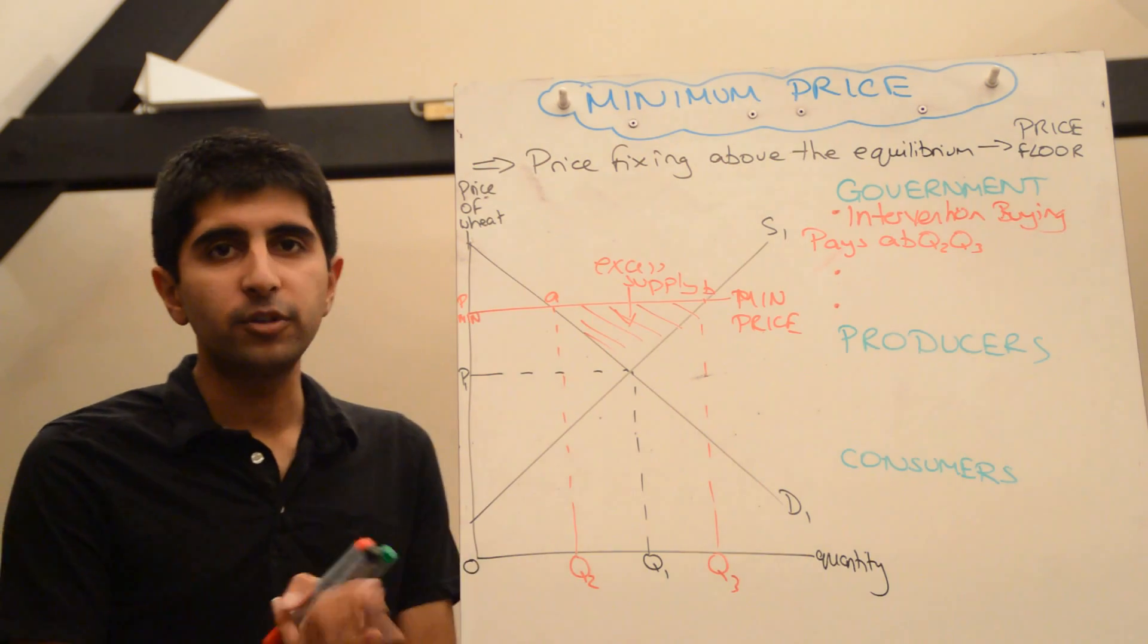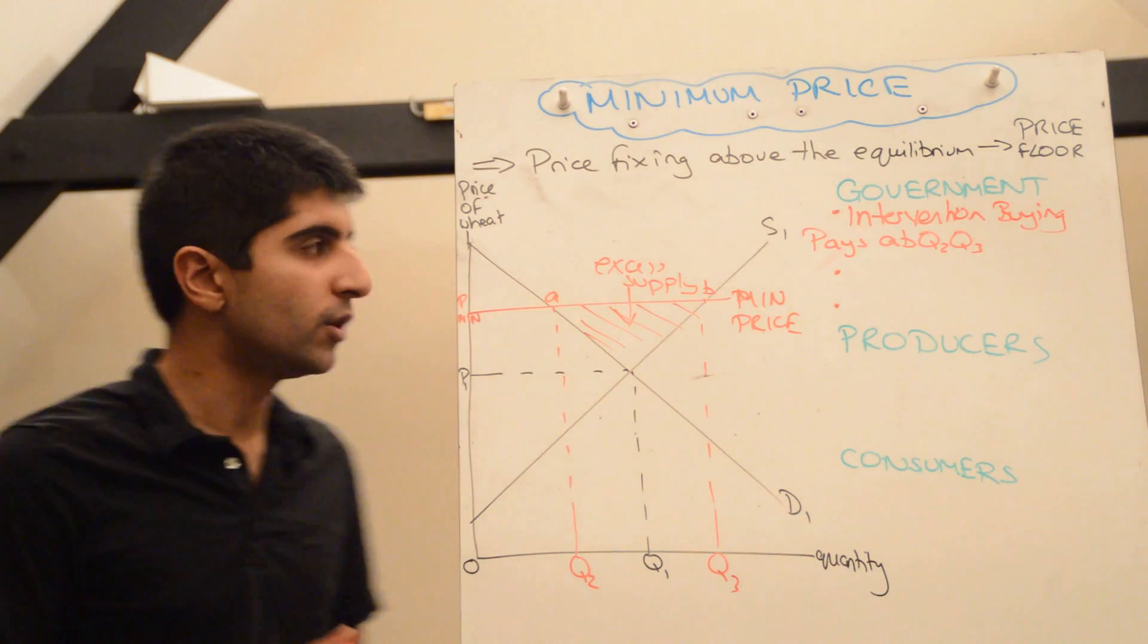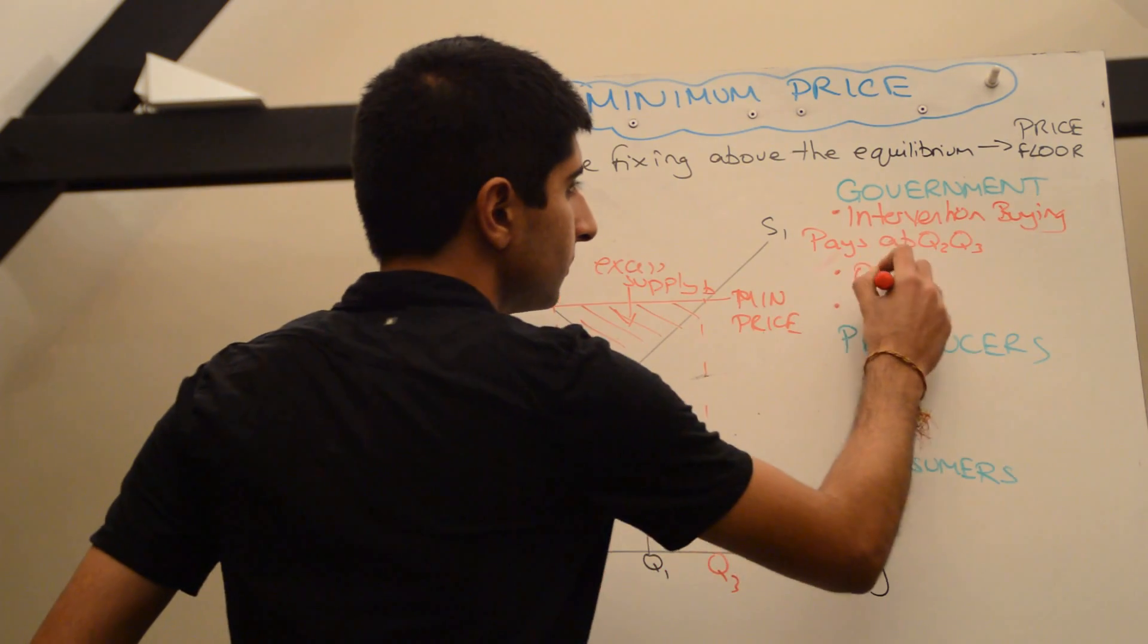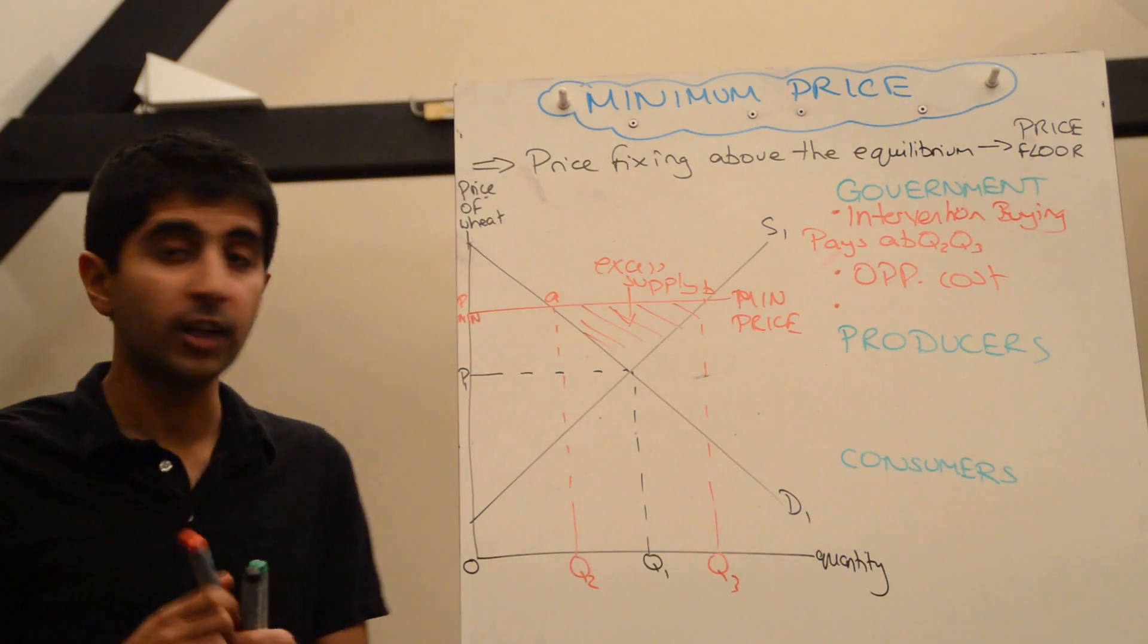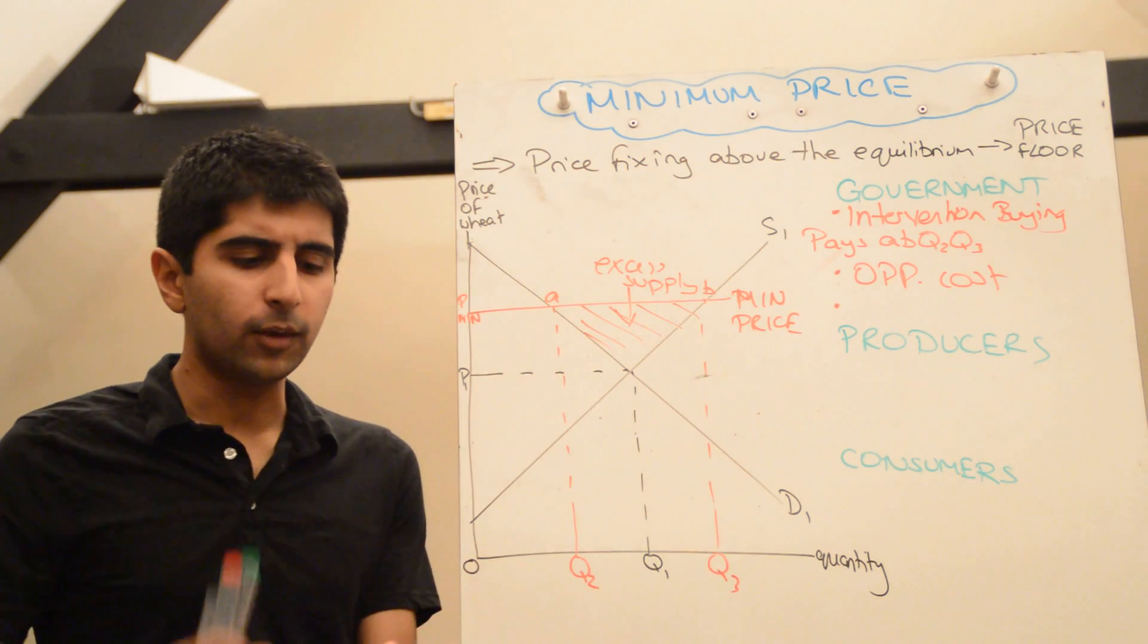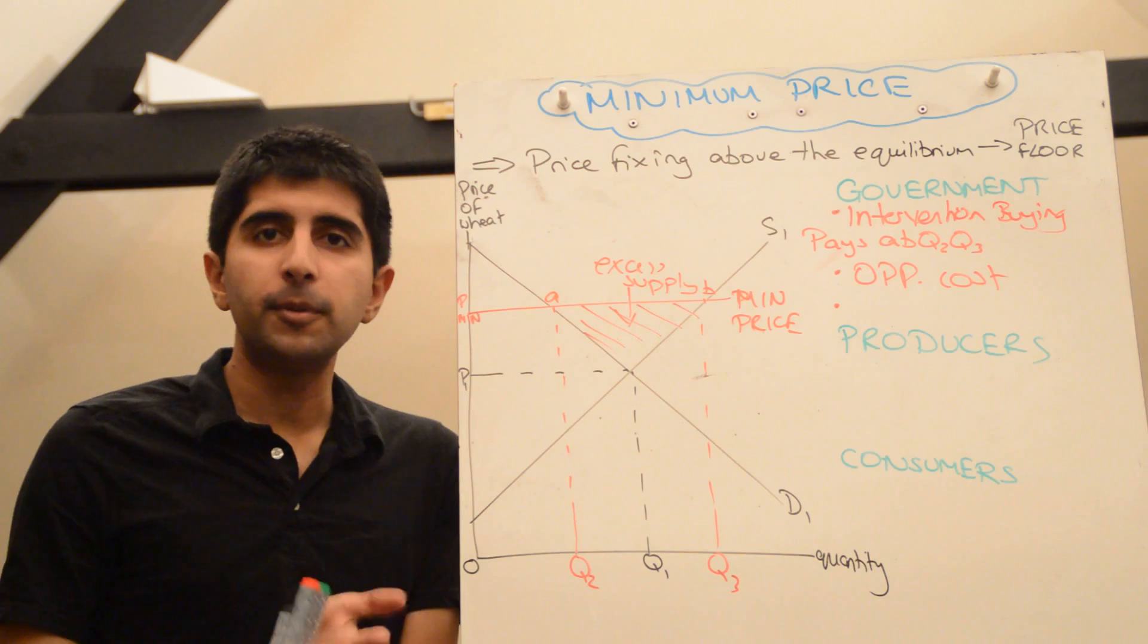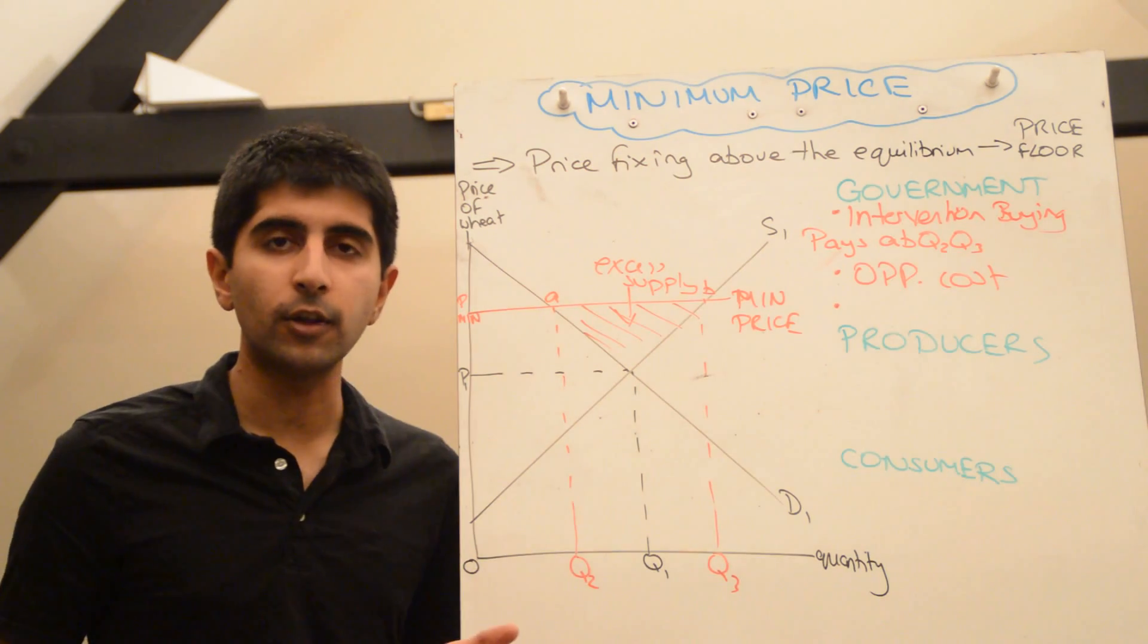So they're the three options. Who knows what they do? Whatever they do, though, there is going to be a substantial opportunity cost. Because there is at least going to be a cost of buying up the excess stock. Then the government has to think, well, could that money have best been spent elsewhere instead of buying up excess stock?